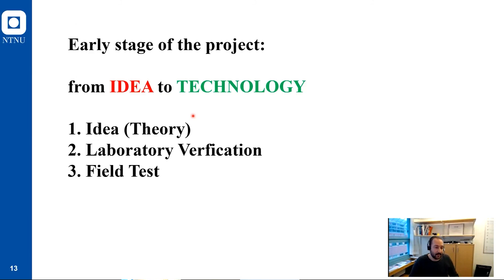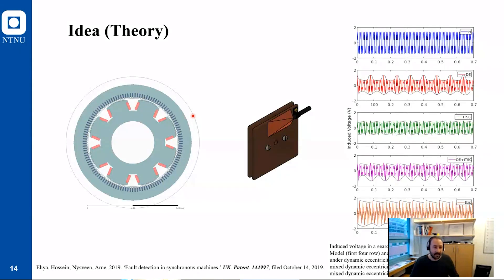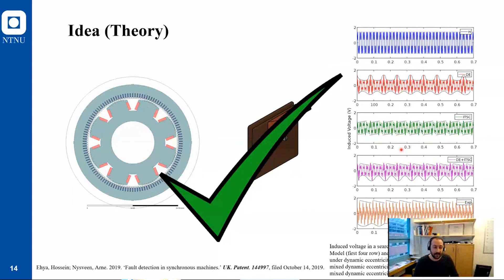In our project we started from idea and we developed the technology. For this we have three steps. We need an idea, the idea must be verified in the laboratory, and we need to test in a real power plant to see how it works. The idea is divided into two parts. The first part is developing a new sensor which is non-invasive, so during machine operation we can attach and measure the signal. It must be robust. We developed the idea in software and we achieved really good results for different types of fault. This step went really well.